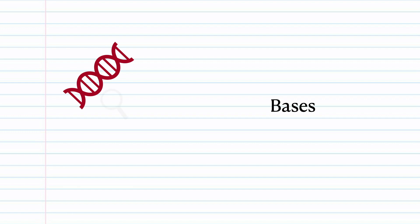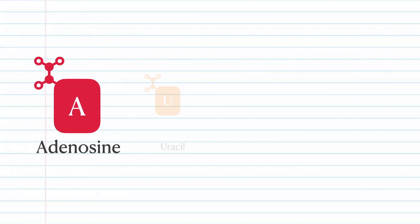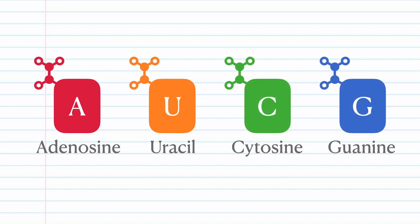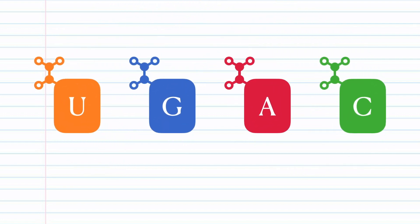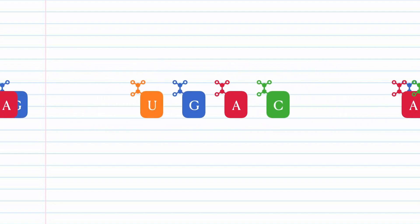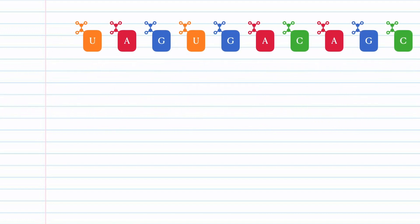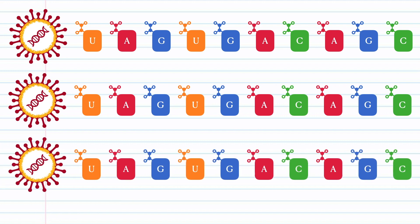If you look closely, you realize that the RNA is just a super long sequence of molecules called bases, which come in four different flavors: adenosine, uracil, cytosine, and guanine — or A, U, C, and G for short. These base molecules can be positioned in any order and can be linked up in a chain many thousands of molecules long. What's key to understand is that the order of these base molecules is the same for all viruses of the same strain.